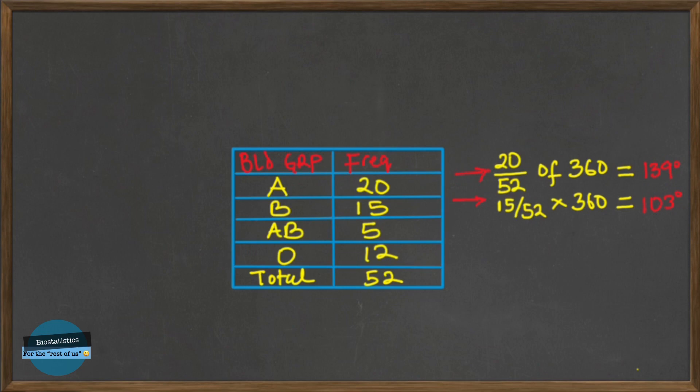For AB, it's 5 divided by 52 and we're going to times it by 360 again and this equals 35 degrees. And lastly, for blood group O, we have 12 individuals and we're going to divide this by 52 times 360 and we're going to have approximately 83 degrees.